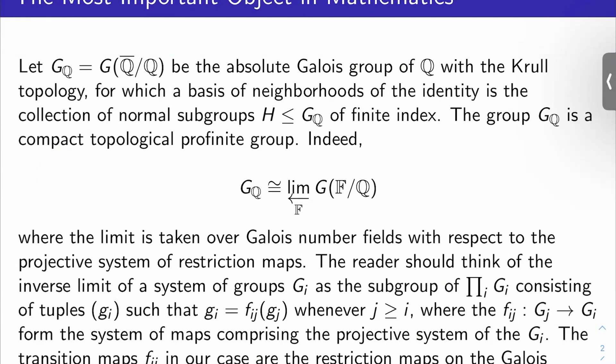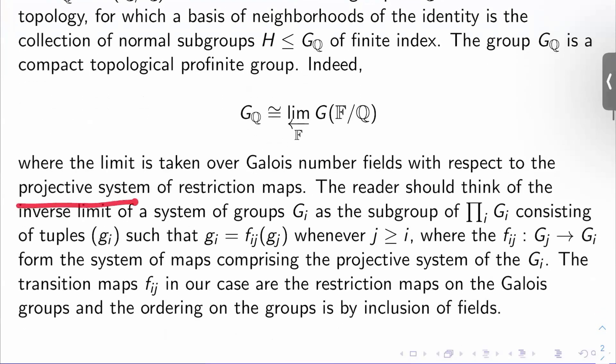So one way of seeing this, for example, is that it's the inverse limit over Galois number fields F of Galois groups of F over Q, with respect to the projective system of restriction maps on these groups. If you've never seen an inverse limit before, it's a construction from algebra.